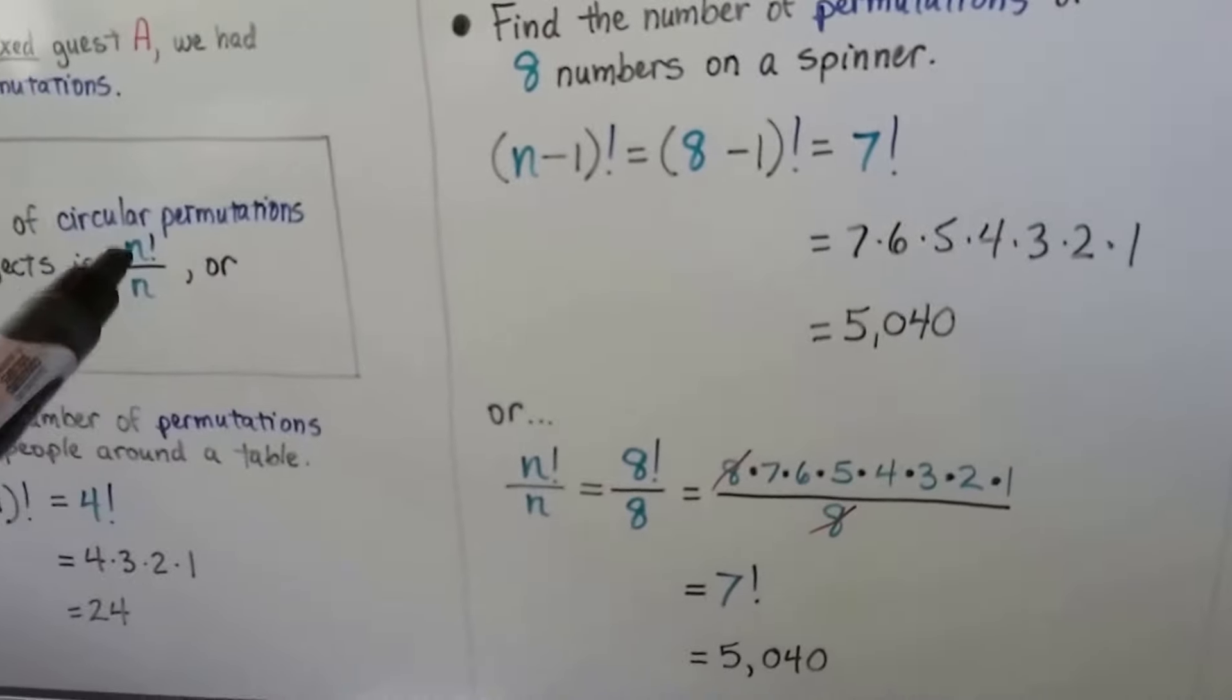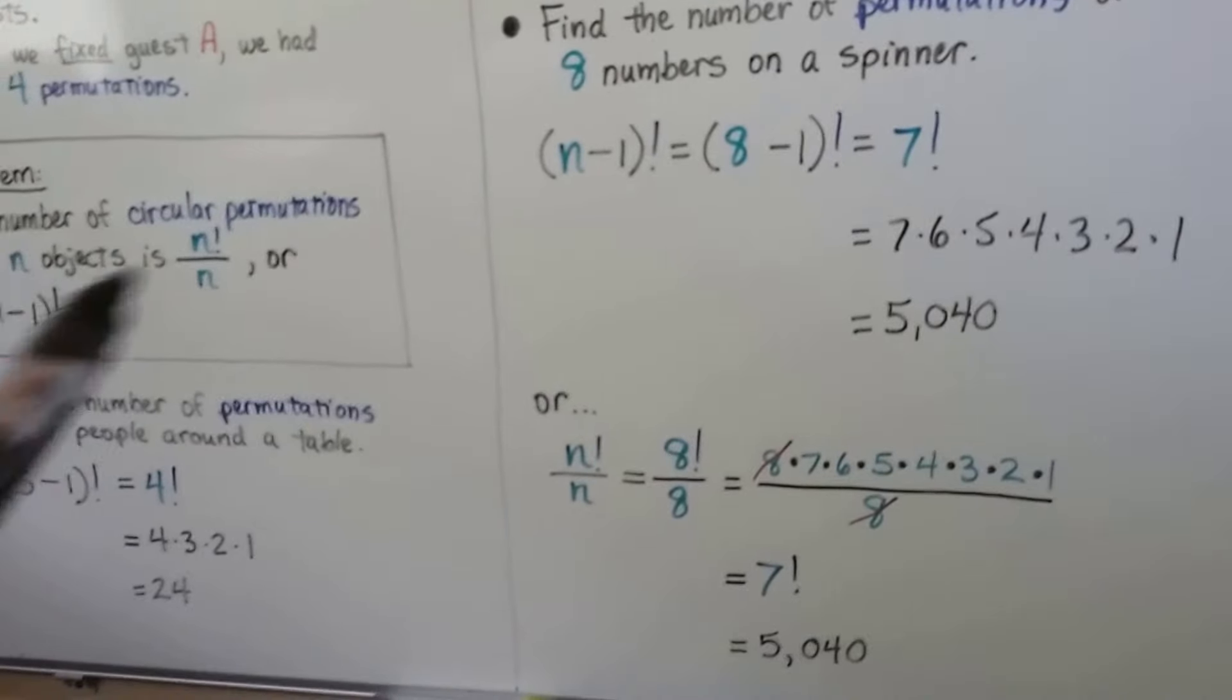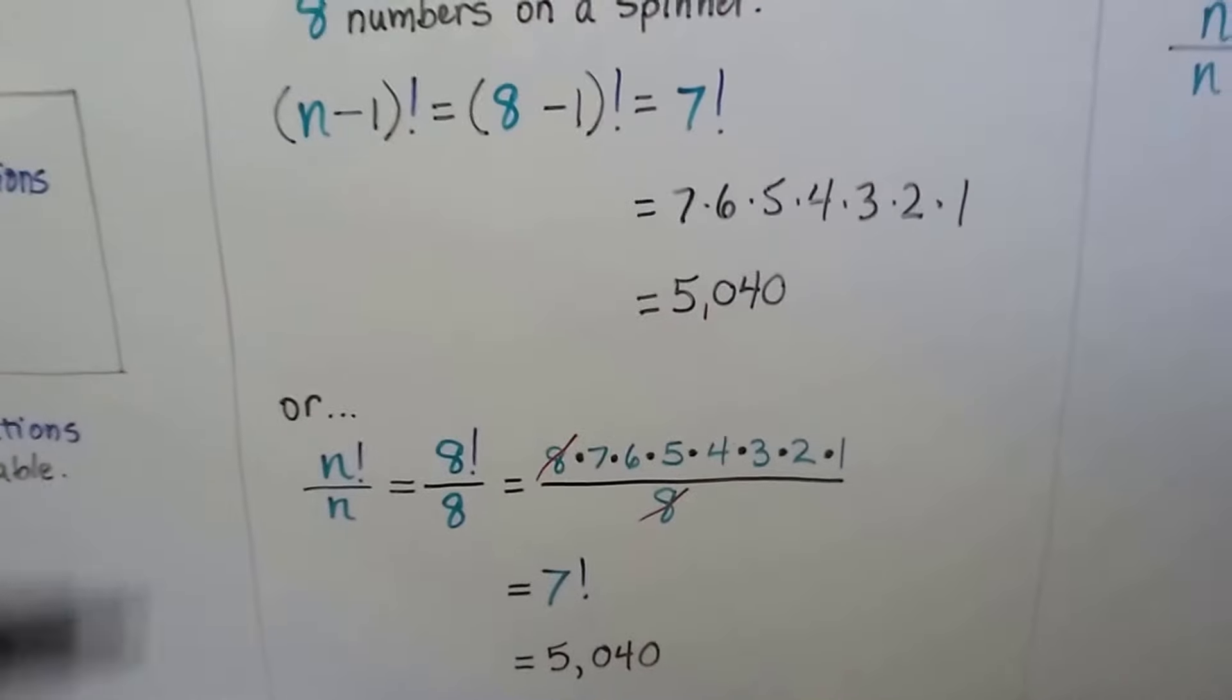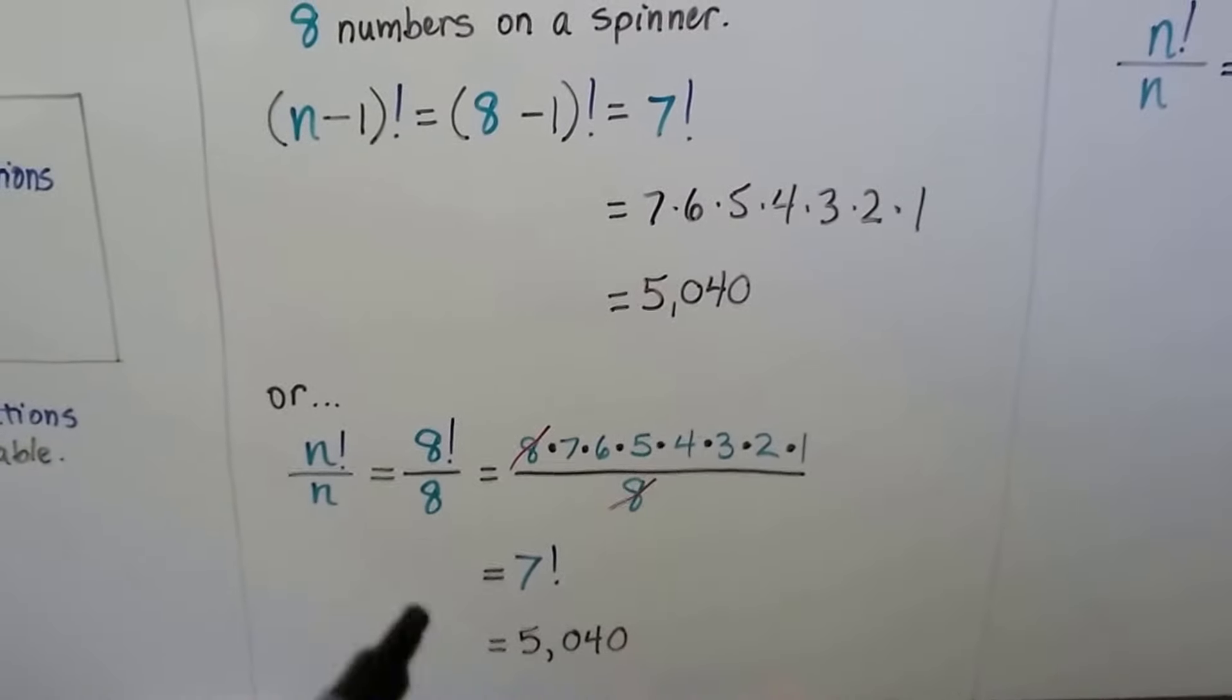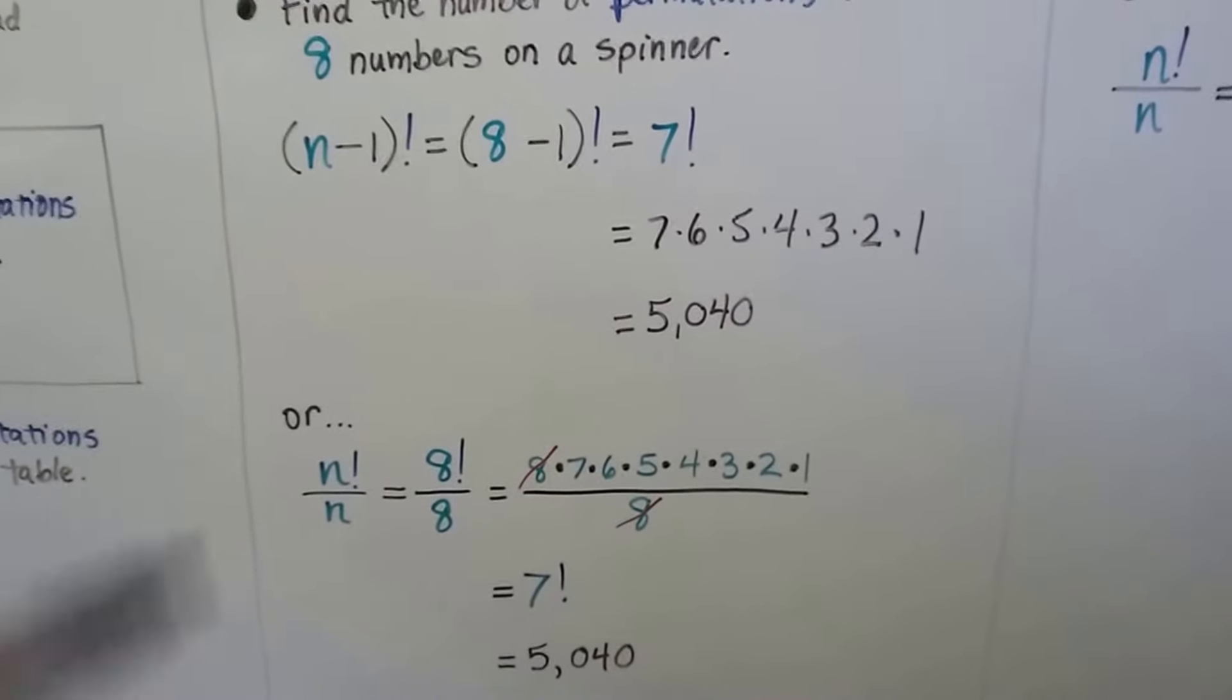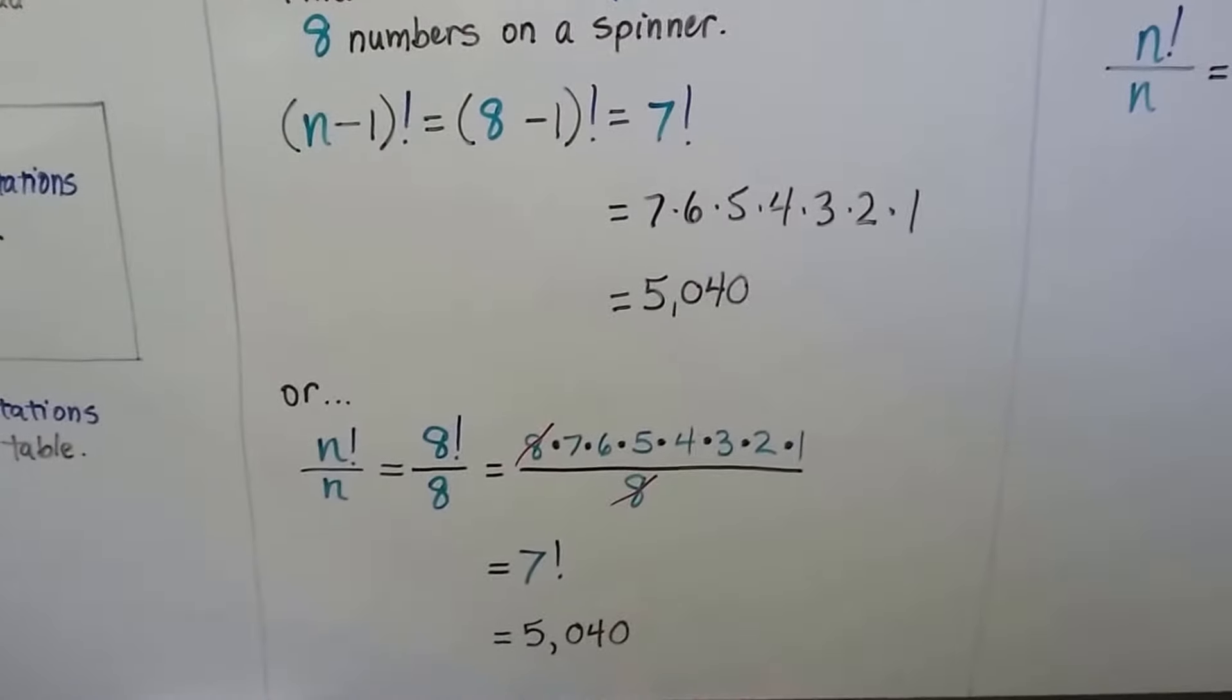And if we look at it as the n factorial over n, because see how it says or, we would be doing 8 factorial over 8, because there's 8 numbers on the spinner. And when we expand it, we can just cancel out these 8s. We end up with 7 factorial, just like we did here, which is 5,040.